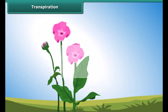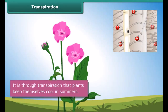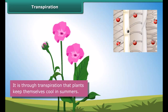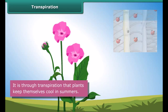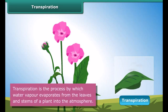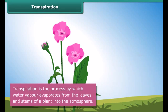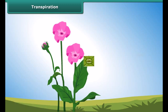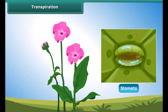An important function of the leaf is to keep the plant cool in summers. This is accomplished through transpiration. Transpiration is the process by which water vapor evaporates from the leaves and stems of a plant into the atmosphere. Small pores called the stomata on the underside of the leaves facilitate transpiration.